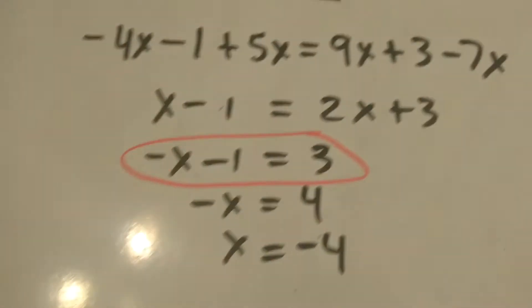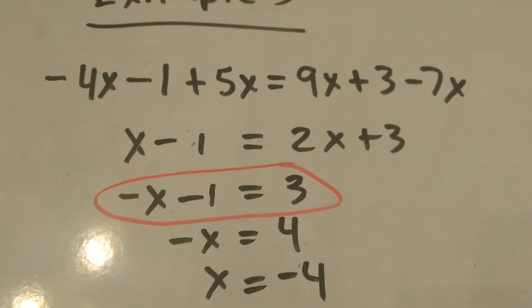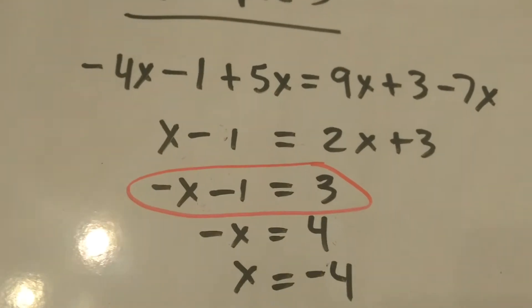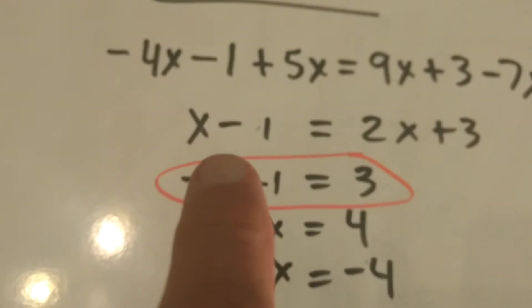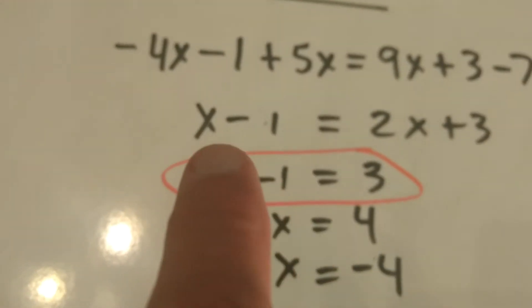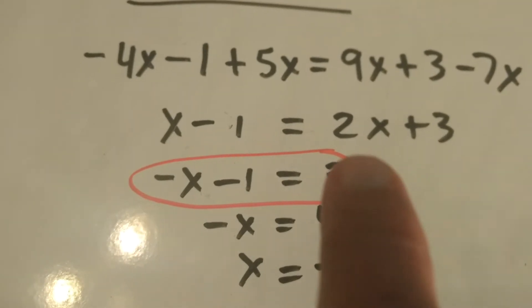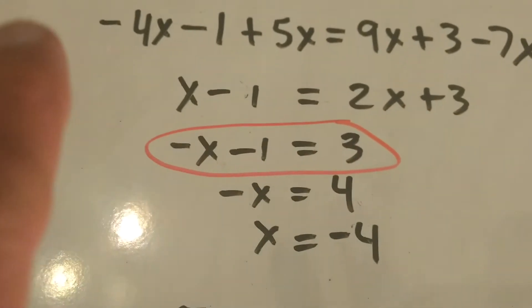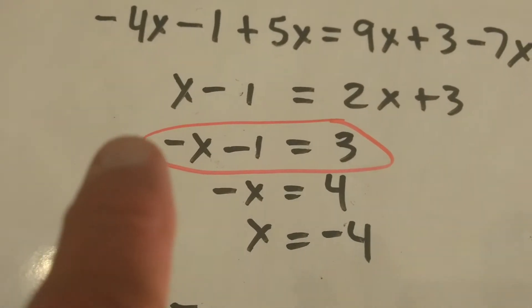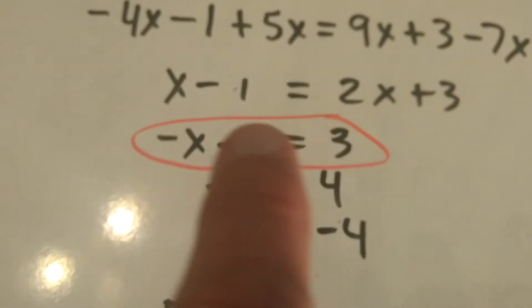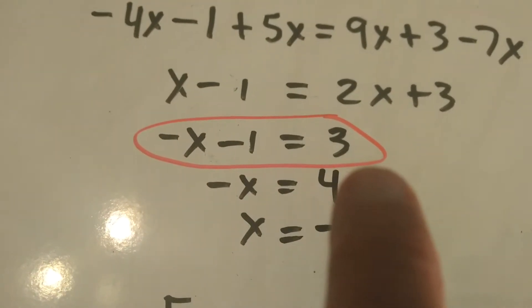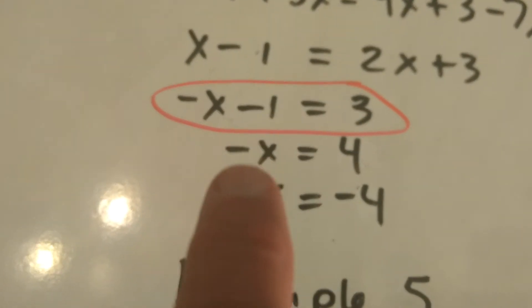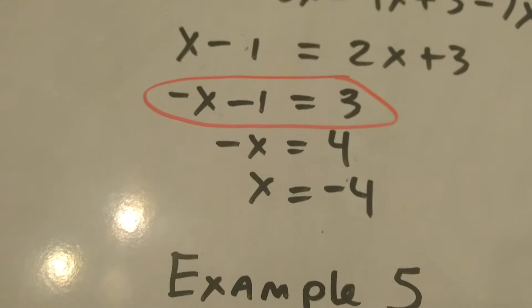Example 3. This again is a multi-step algebraic problem. In this particular one here, we've got to collect like terms. So the first step here is negative 4x plus 5x is x minus 1. 9x minus 7x is 2x plus 3. Always move your variable numbers to the left because you want the variable number in the front on the left. So I subtracted 2x from both sides, got negative x minus 1 equals 3. Notice I'm in two-step form. Add the 1. Divide by negative 1. x equals negative 4.